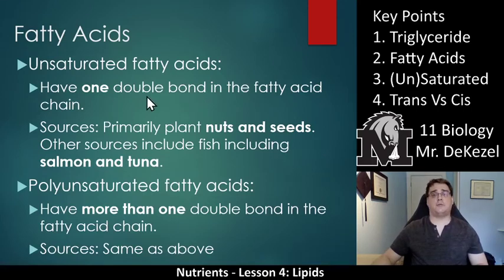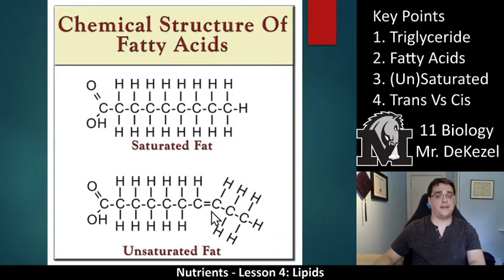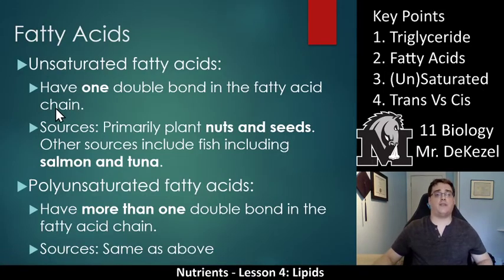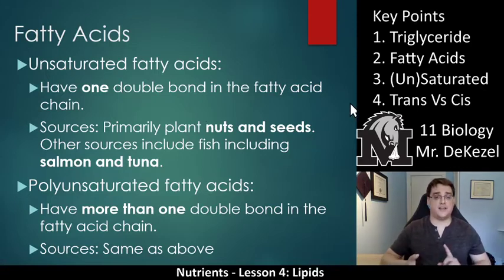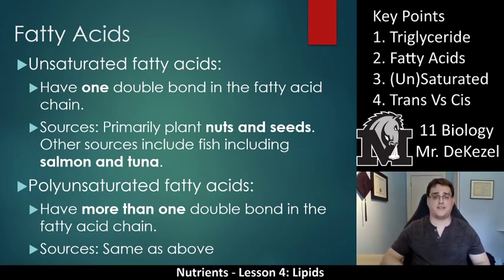Unsaturated fatty acids have one double bond in the fatty acid chain. You can see how the chain bends a little — that bend is good. These are primarily the good fats found in seeds, nuts, salmon, and tuna. These are good oils and good fats for you, unlike meat fats, lard, butter, and dairy.